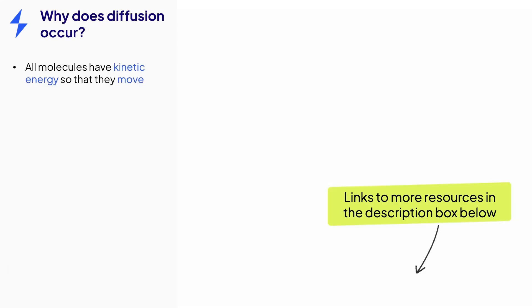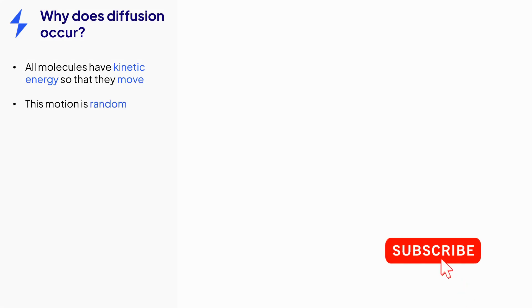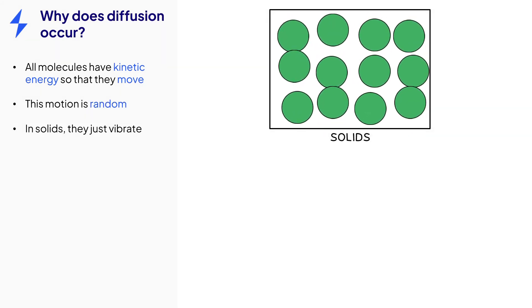Diffusion happens because molecules have kinetic energy, meaning that they move around. This movement of molecules is random. In solids, molecules vibrate against each other but cannot move relative to the neighboring molecules.